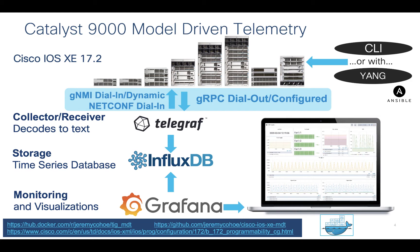And once we turn it on, we're going to push the telemetry to the Telegraph receiver or collector. So Telegraph, in this case, is going to listen as a server for the telemetry data that's being pushed out over the gRPC telemetry interface from the switch. Telegraph is going to receive the telemetry data and then push it out — basically it's going to make another API call to InfluxDB, which is going to be just for storage. This is going to be our time series database that we use to store the telemetry data. And then Grafana will make API calls again into InfluxDB to visualize this telemetry data. That's what we see here just in this screenshot on the right — Grafana visualizing the telemetry data that we're pushing out from the Cat9K.